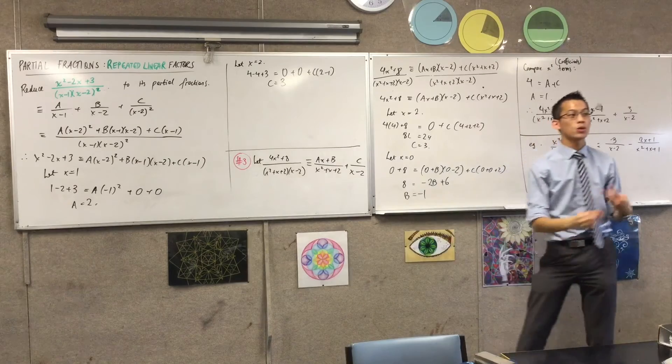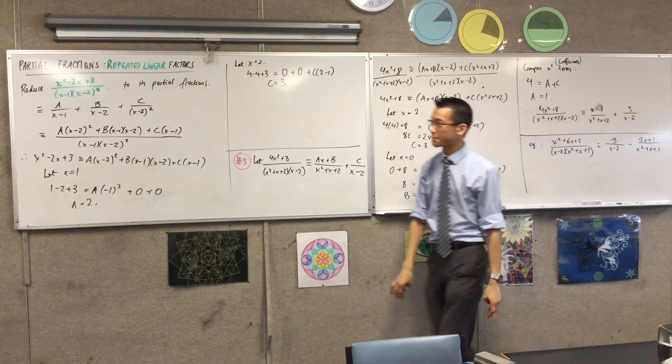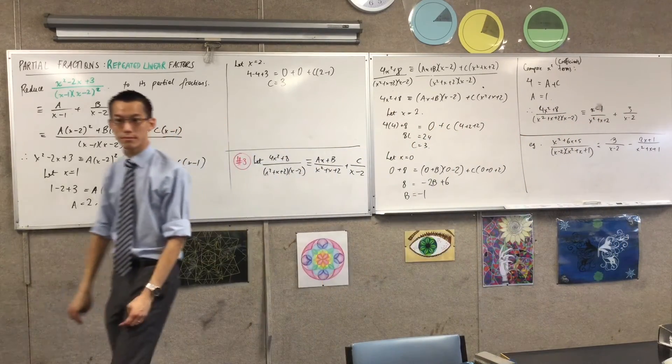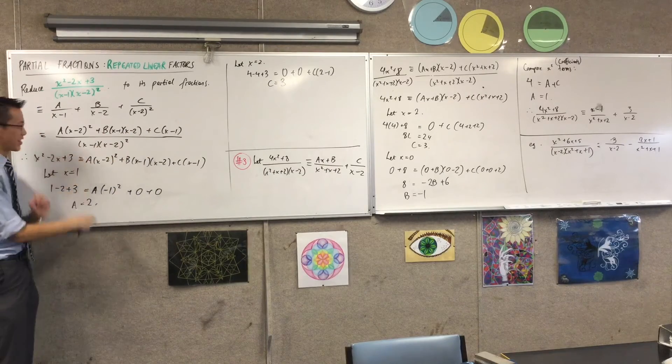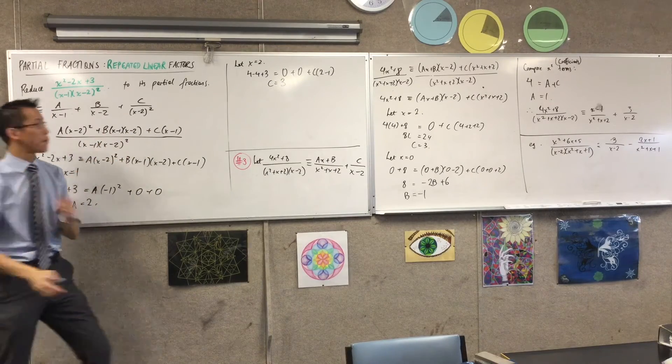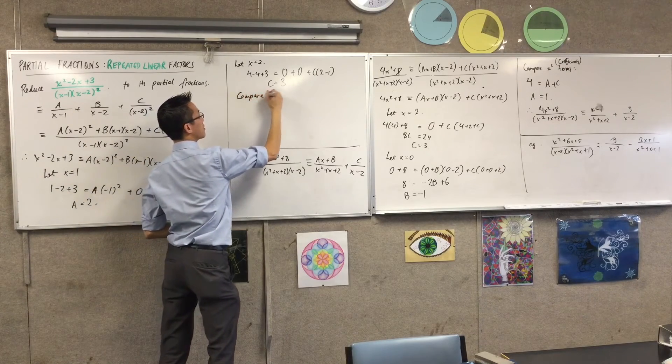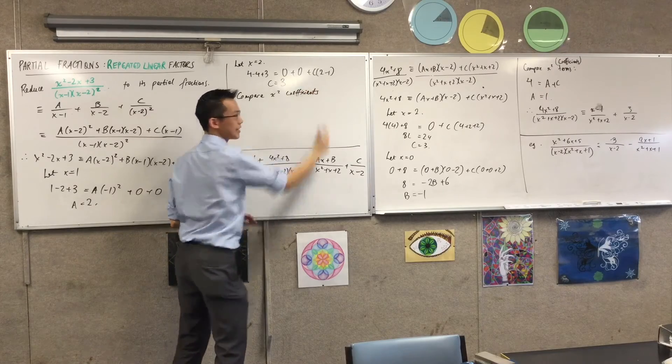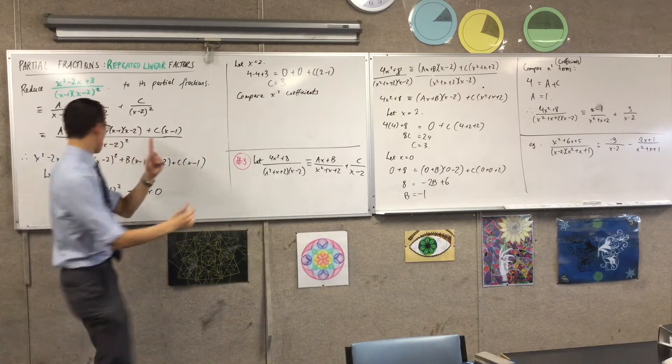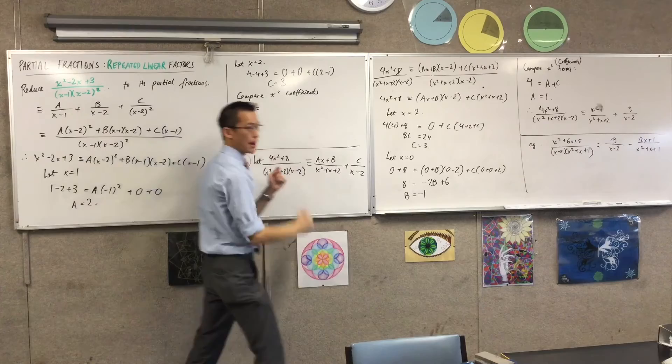Okay? I've got a, I've got c. What would you like me to do to get the b term? Yeah, I've run out of convenient values to put in, because I've used up all my factors. So, I'm going to compare x squared coefficients. What's the coefficient of x squared on the left-hand side? It's 1, right?